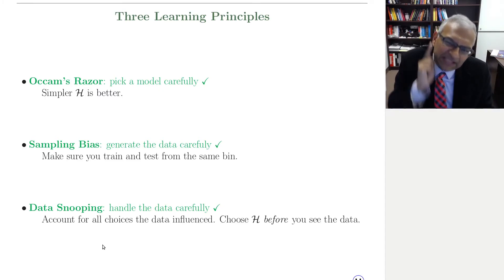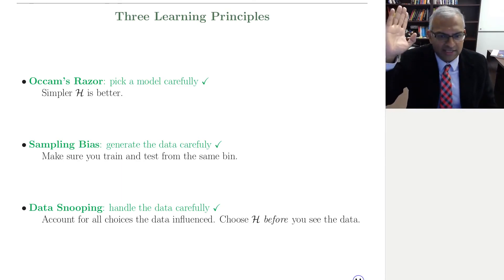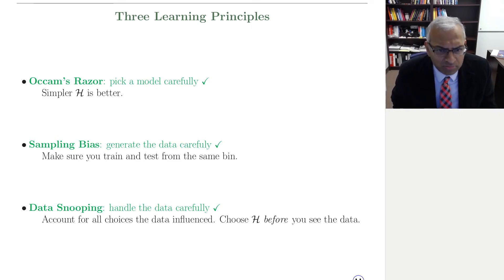Sampling bias. Generate the data carefully. Make sure you train and test from the same bin. Otherwise, anything can happen. It's not that otherwise you're almost okay. No, anything can happen. It could be okay. It could be a total disaster. Usually, it's a total disaster. And most of the real screw-ups in machine learning from data come from sampling bias. Just like the headline with Dewey Defeating Truman.